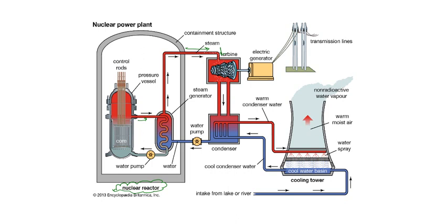The turbine converts the mechanical energy of the high pressure steam into electrical energy. This electrical energy is then provided to the bus bar and through the transmission line to the consumer. The steam coming out from the turbine goes to the condenser where it is condensed. The water is then pumped back to the heat exchanger, completing the cycle.